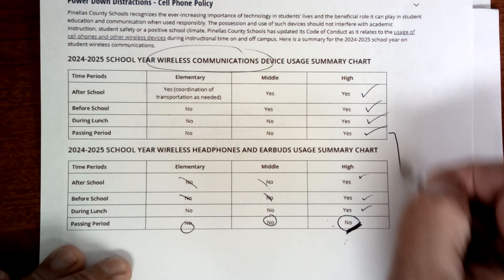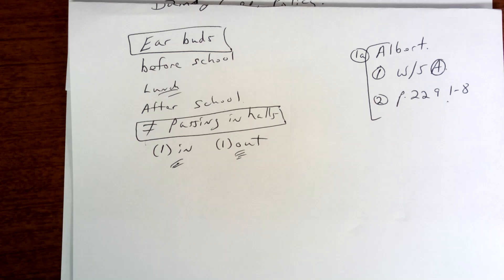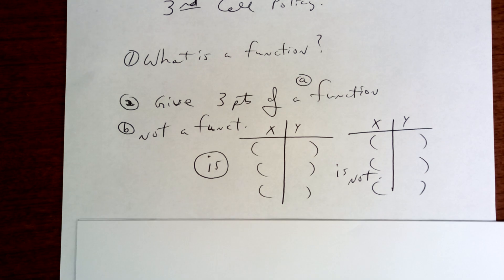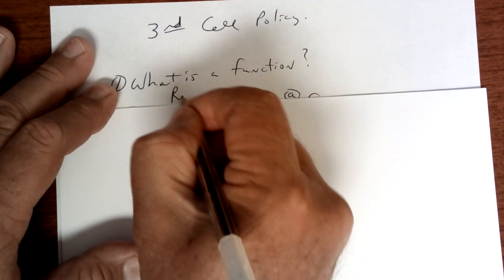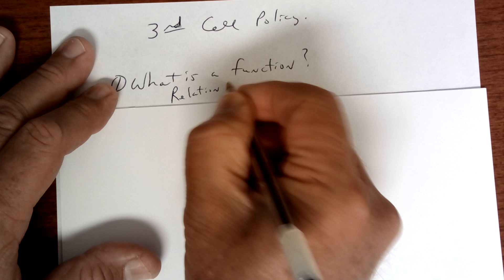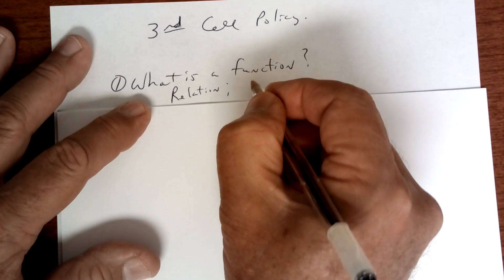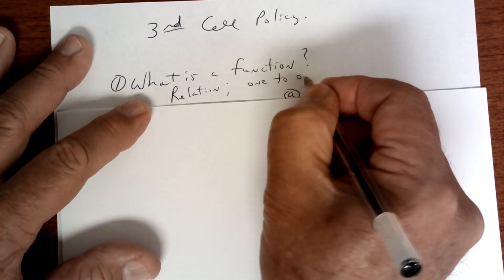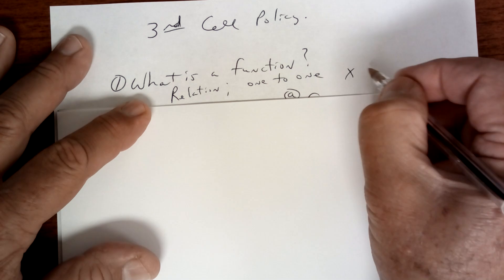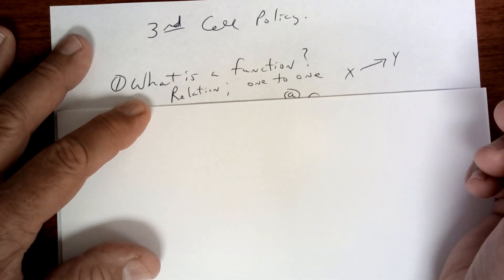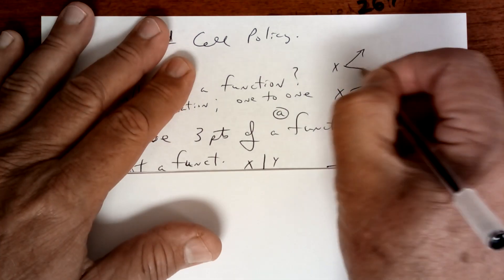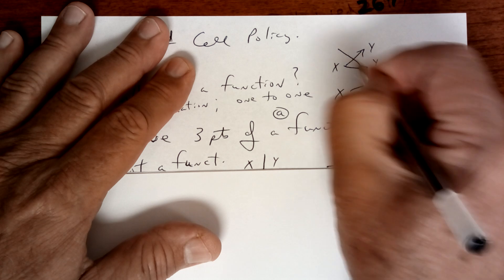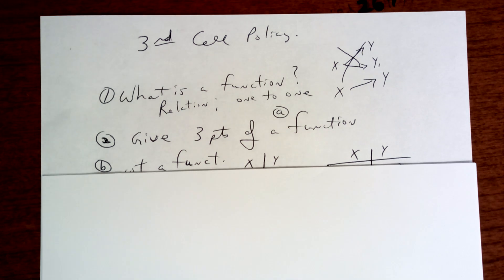What is a function? A function is a relation, but it's a one-to-one correspondence — for each x there's only one y. That is a function. If your x has two y's, it is not a function. Write that down and make sure you know it.